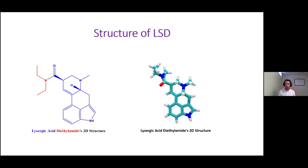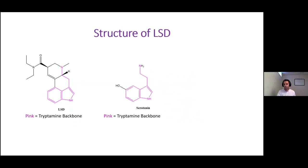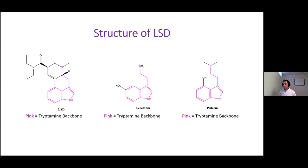A two-dimensional representation of the molecule, and then on the right, a three-dimensional representation. In the 1950s, when people were first understanding the mechanism of action of LSD, they realized something quite interesting: LSD has a structural similarity to a neurotransmitter inside our brain called serotonin. Outlined in pink is the common feature of these structures, called a tryptamine backbone. This drove the idea that if LSD has a structure like serotonin, it probably binds to the same receptor - and this was proven to be true. Another compound with this tryptamine backbone is psilocin, a metabolite of psilocybin from psychedelic mushrooms.